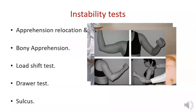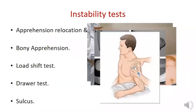Pony apprehension means the apprehension test is positive at low abduction angles. The load-shift test is performed with the arm at rest, the examiner stabilizing the scapula and applying anterior and posterior translation force to the humeral head to define the percentage of subluxation. It can be repeated at different degrees of internal and external rotation as well as different degrees of abduction.